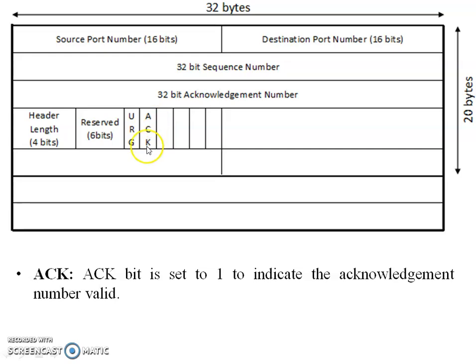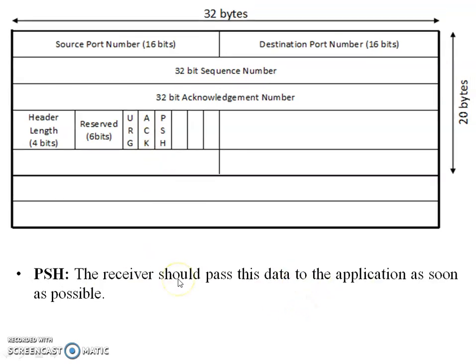The ACK flag is set to one whenever the receiver sends data to the sender — it means acknowledgement comes from receiver to sender. The PSH (push) flag means the receiver should pass this data to the application as soon as possible.